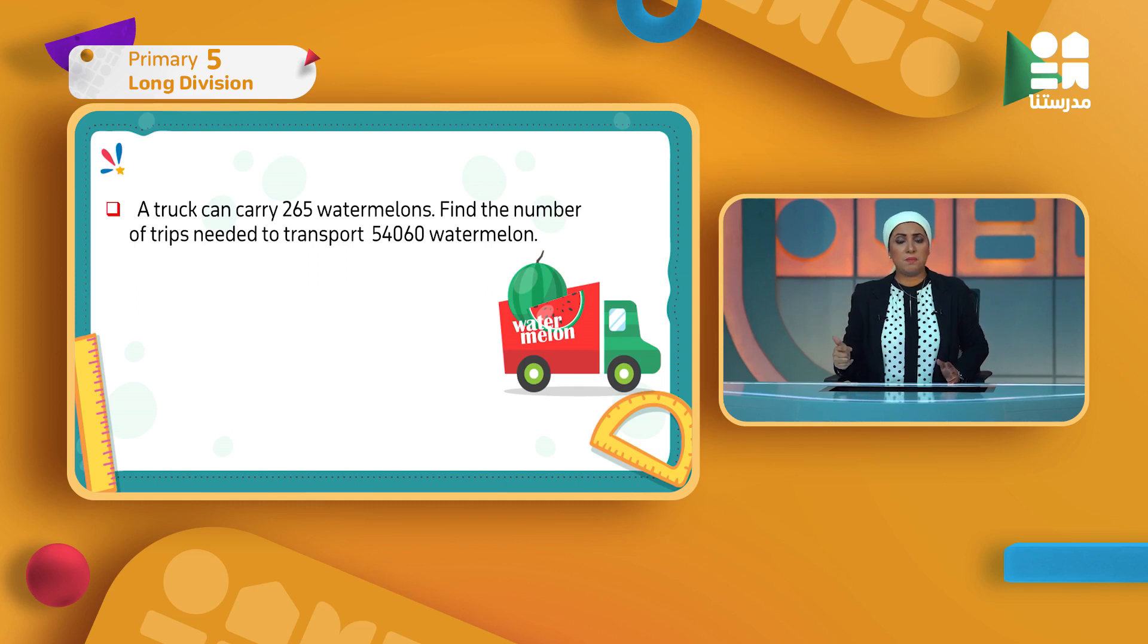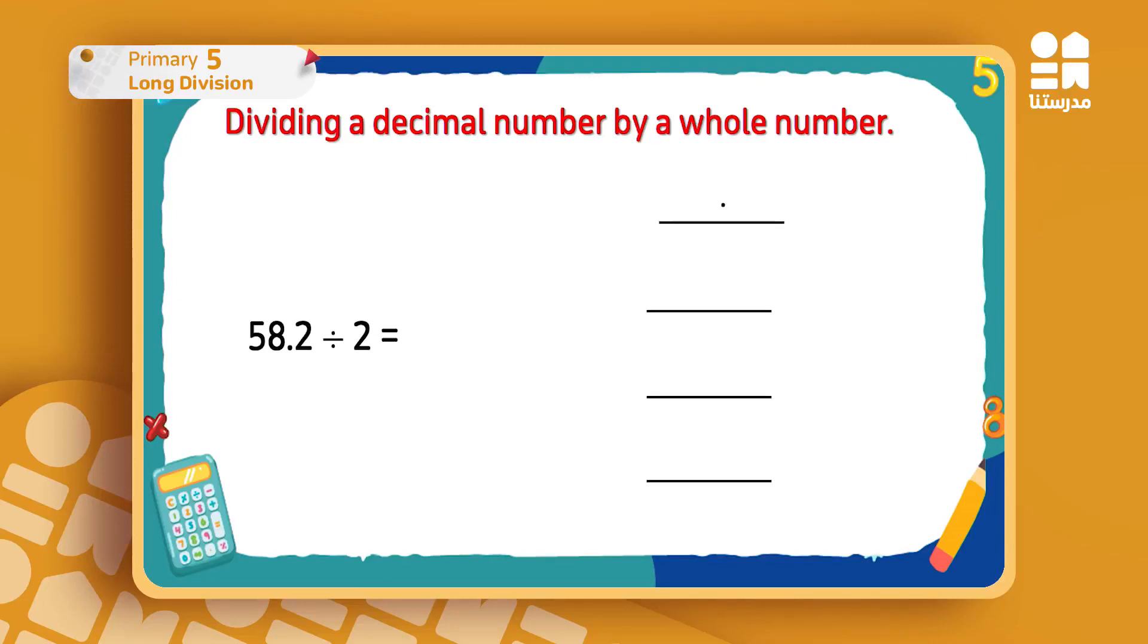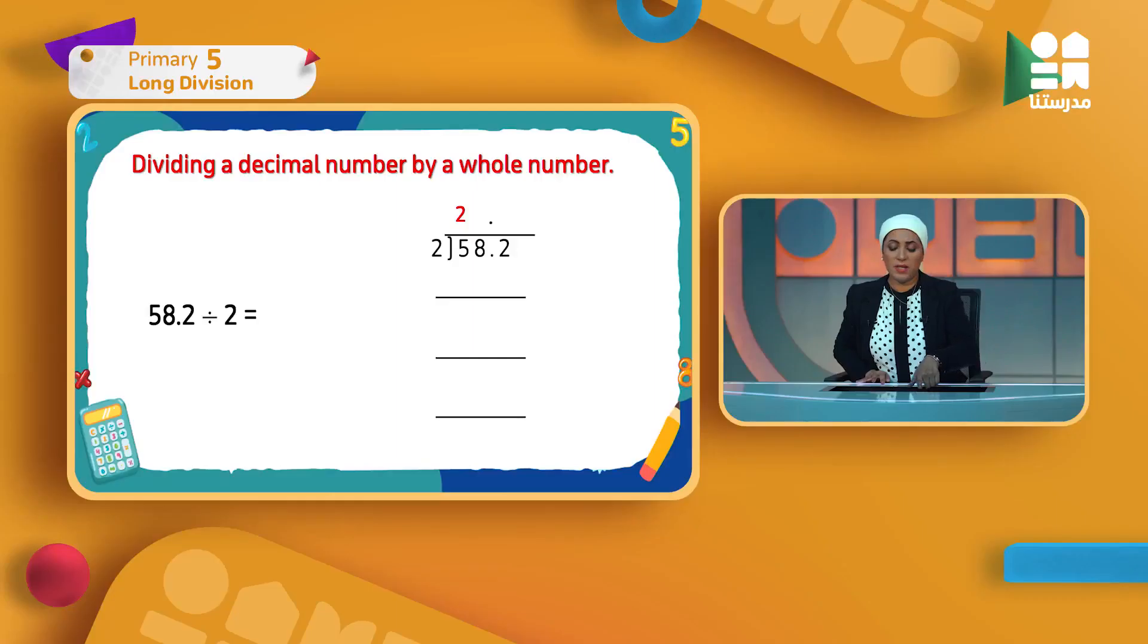Now let's move to another point, a new concept: dividing a decimal number by a whole number. This time I have a decimal. How do I do it? 58.2 divided by 2. I have the align method here. I'll change it to the house method and start to work. The divisor is 2, I write it outside. The dividend 58.2, I write it inside. I'll start to work with the problem as if I don't see the decimal point at all, as if they are whole numbers.